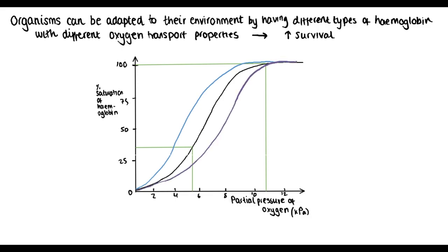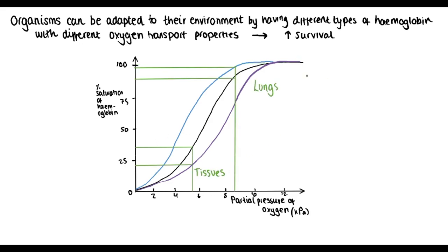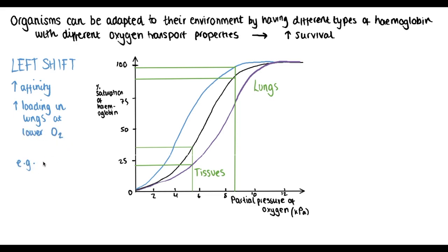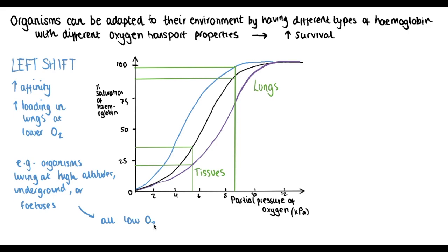To interpret a left-shifted curve, we pick the advantage in the lungs. A left shift means haemoglobin has a higher affinity for oxygen and loads more readily at a lower oxygen concentration — this is the main advantage. This is particularly useful for organisms in low-oxygen environments. An example is fetal haemoglobin, which has a higher affinity for oxygen than adult haemoglobin. By the time the mother's blood reaches the placenta, its oxygen saturation has decreased. Therefore, fetal haemoglobin needs to be better at absorbing oxygen so the fetus can obtain oxygen from the mother's blood across the placenta.